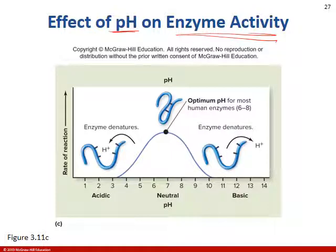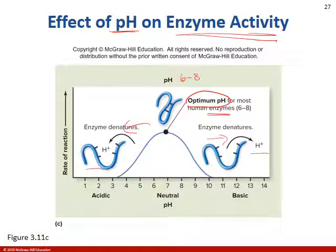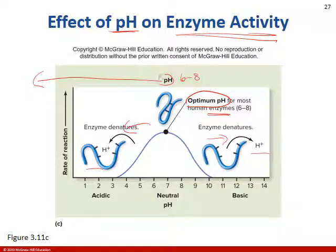pH has the same effect on enzyme activity. There's an optimal pH for enzymes — usually between pH 6 and 8 for most human enzymes. If the pH is too low or too high, the enzyme breaks apart (denatures). Enzymes are specific to their pH environment. For example, the stomach has a pH of about 2, so enzymes found in the stomach have that low pH as their optimal range.